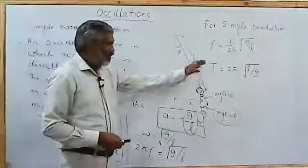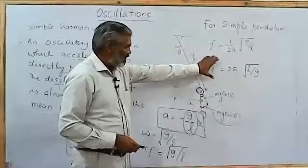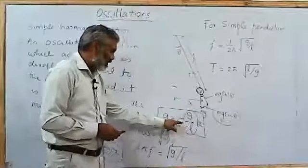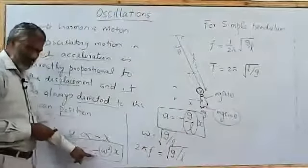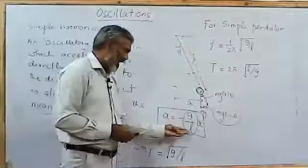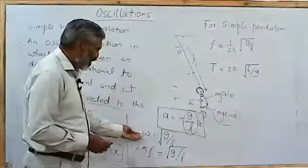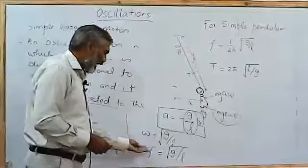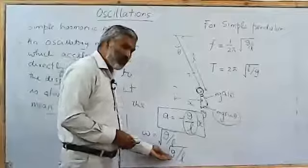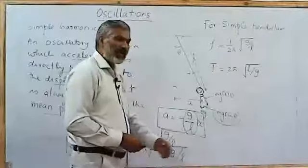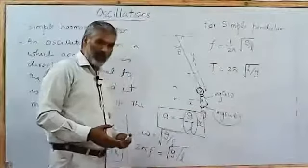So in order to derive this expression, all you have to do is you will compare this part of this equation with the standard equation of simple harmonic motion, which means ω² is G/L, and therefore ω is √(G/L). Therefore, it is 2πf, which is equal to √(G/L), and therefore the expression for frequency or time period can be easily derived from it.